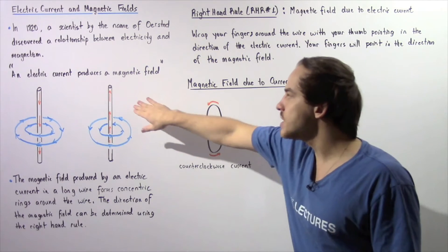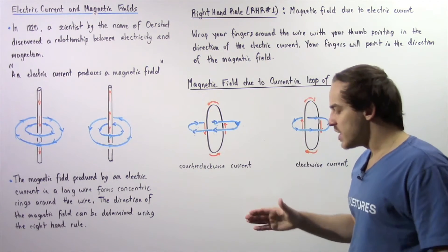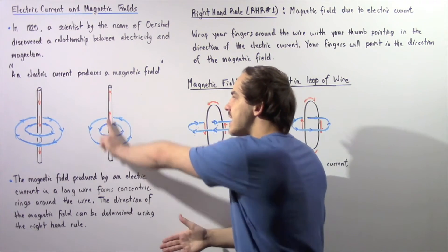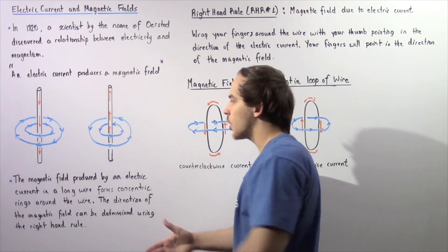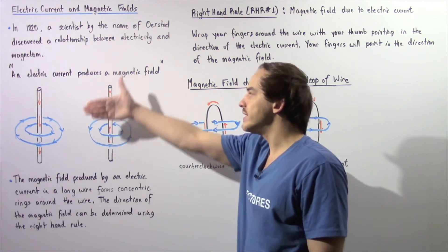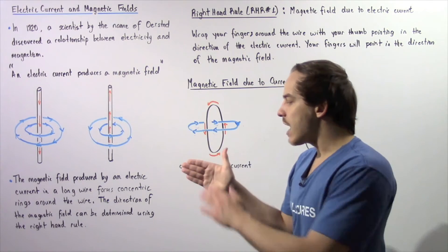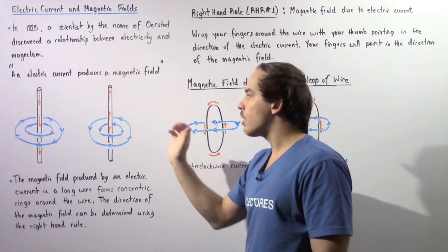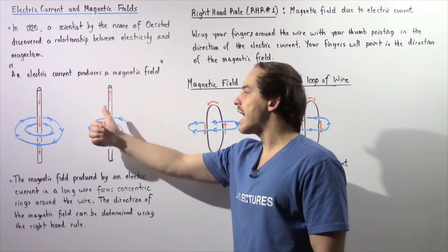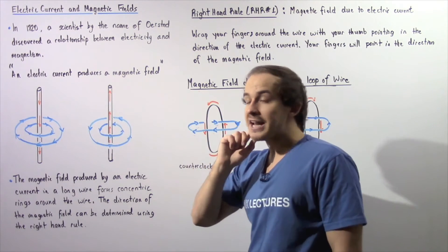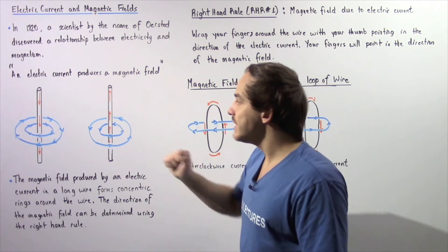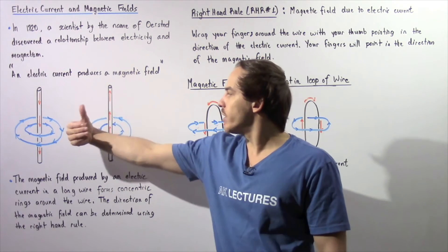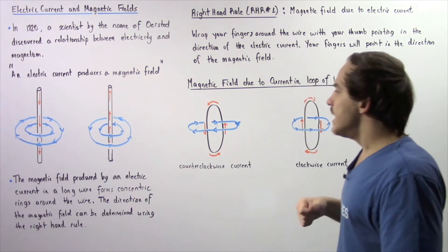Likewise, let's apply that to the second wire. We take our right hand and point our thumb in the same direction as our electric current, which means our thumb points upward. Then we take our fingers and curl them around our wire in the same direction as our magnetic field, as shown. So that means in this case the magnetic field points inward, and in the other case the magnetic field points outward, as shown.